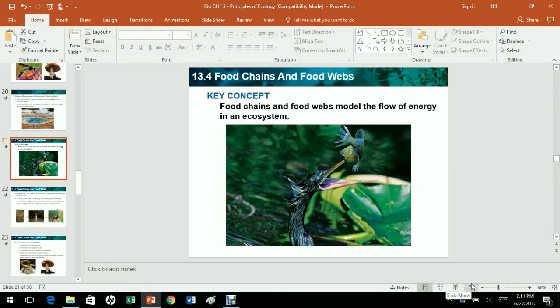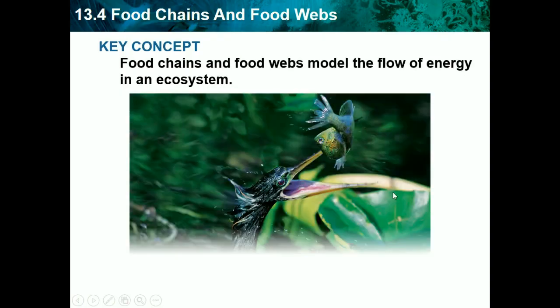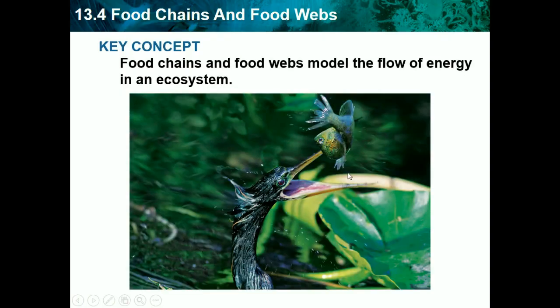Hello, this is Josh Patel back again with another biology lesson. Today we'll be finishing chapter three, which was principles of ecology, and we'll start at 13.4. Our key concept for 13.4, which is food chains and food webs, is that food chains and food webs model the flow of energy in an ecosystem.